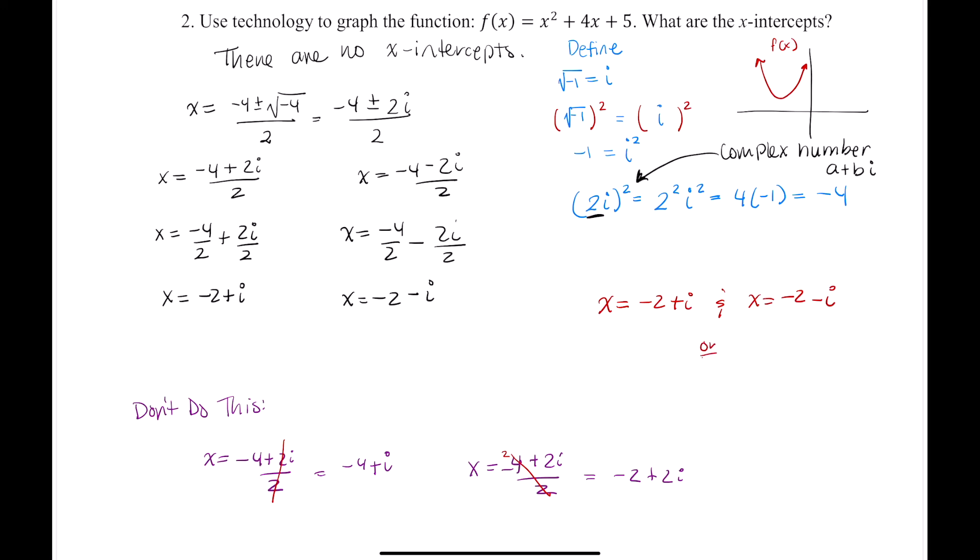So my intercepts or my solutions are x equals negative 2 plus i and x equals negative 2 minus i. We can also write this as x equals negative 2 plus or minus i. And this solution or this solution are acceptable. Either one. But please choose one or the other. Otherwise, I might think that you don't understand the difference.